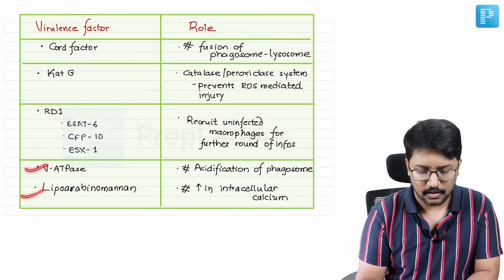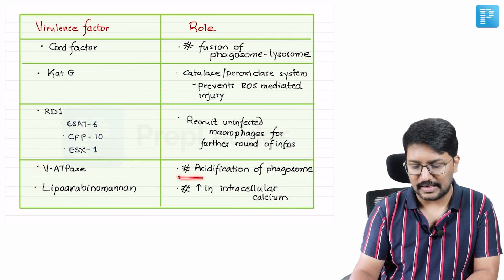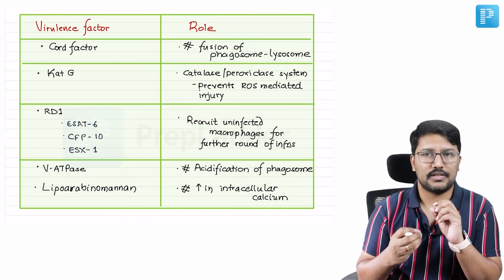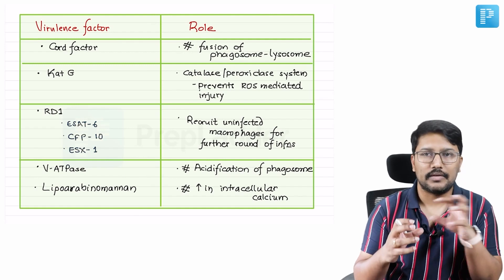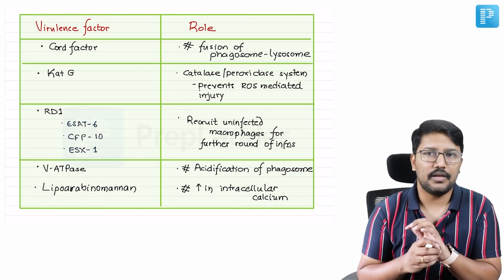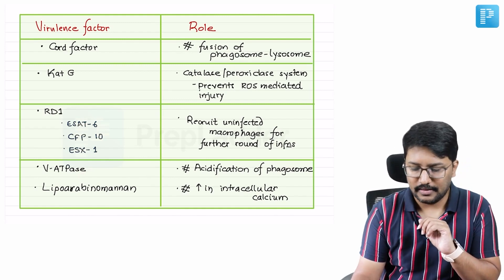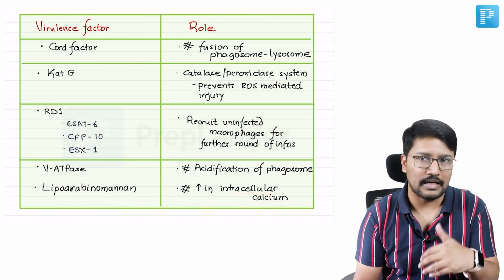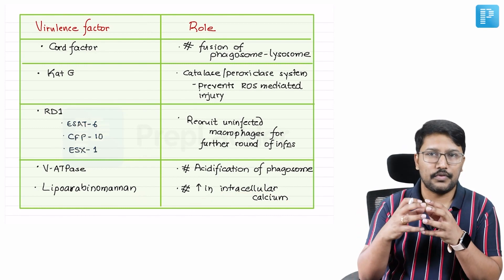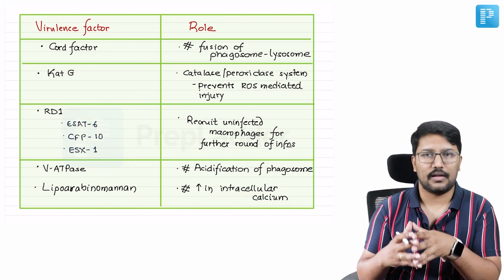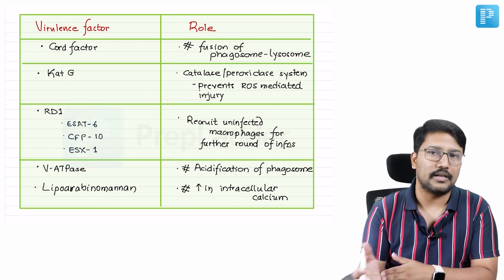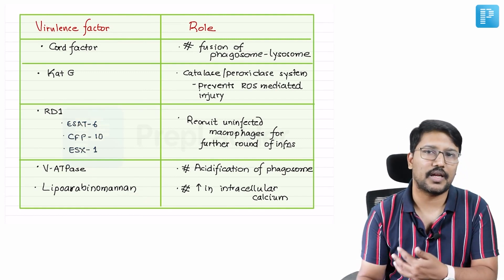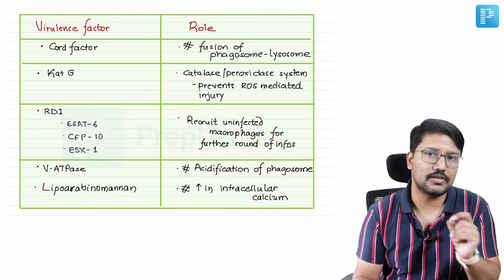Moving on, there are other virulence factors like V-ATPase, which prevents acidification of the phagosome. Once mycobacteria are engulfed by macrophages and are inside in the form of a phagosome, the host cell acidifies it — but this can be inhibited by V-ATPase. They also have lipoarabinomannan, which acts as an inhibitor of intracellular calcium influx. Phagosome-lysosome fusion requires an increase in intracellular calcium via the calcium-calmodulin pathway, and lipoarabinomannan inhibits that. There are thus various mechanisms how tubercle bacilli evade the host's immune response.